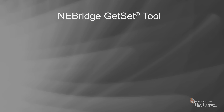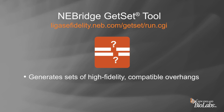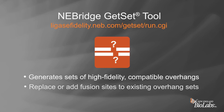The NEBridge Get Set tool generates sets of high-fidelity compatible overhangs when the sequence of the fusion site overhangs may be arbitrary, such as in standardized modular assembly strategies. The tool can modify existing assemblies by replacing individual overhangs or expanding an overhang set for additional fusion sites while maintaining optimal fidelity. You may choose to require or exclude specific overhangs in the design.